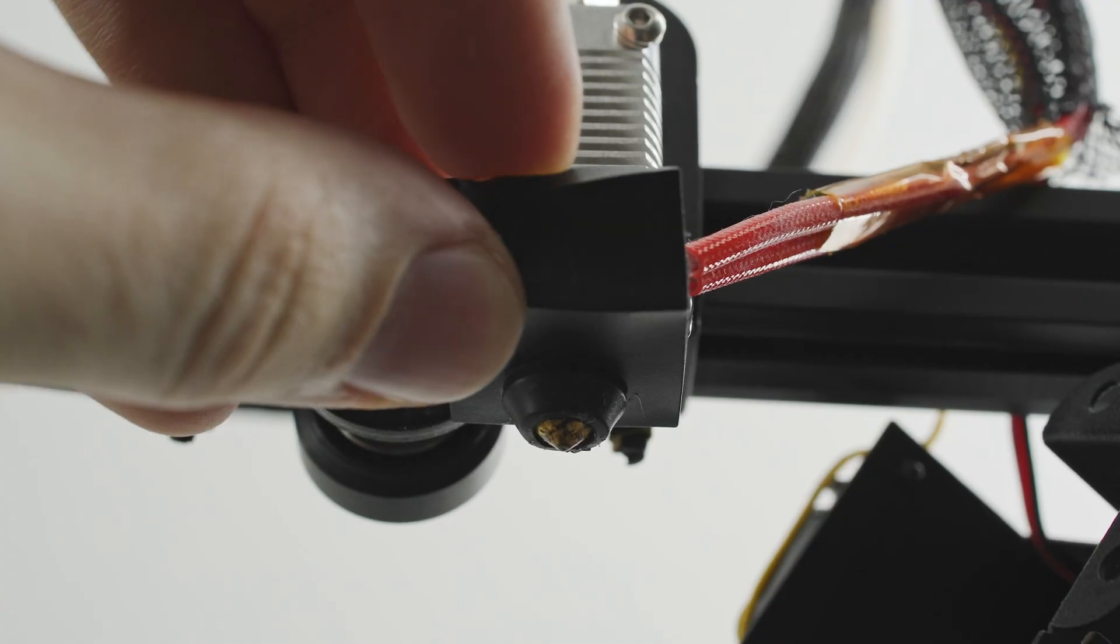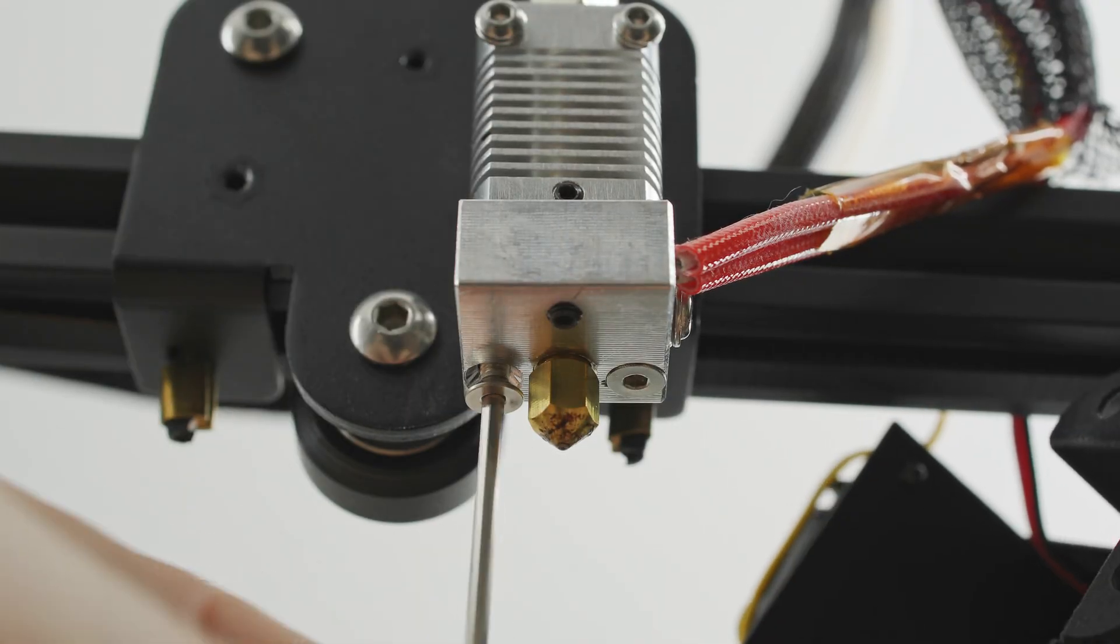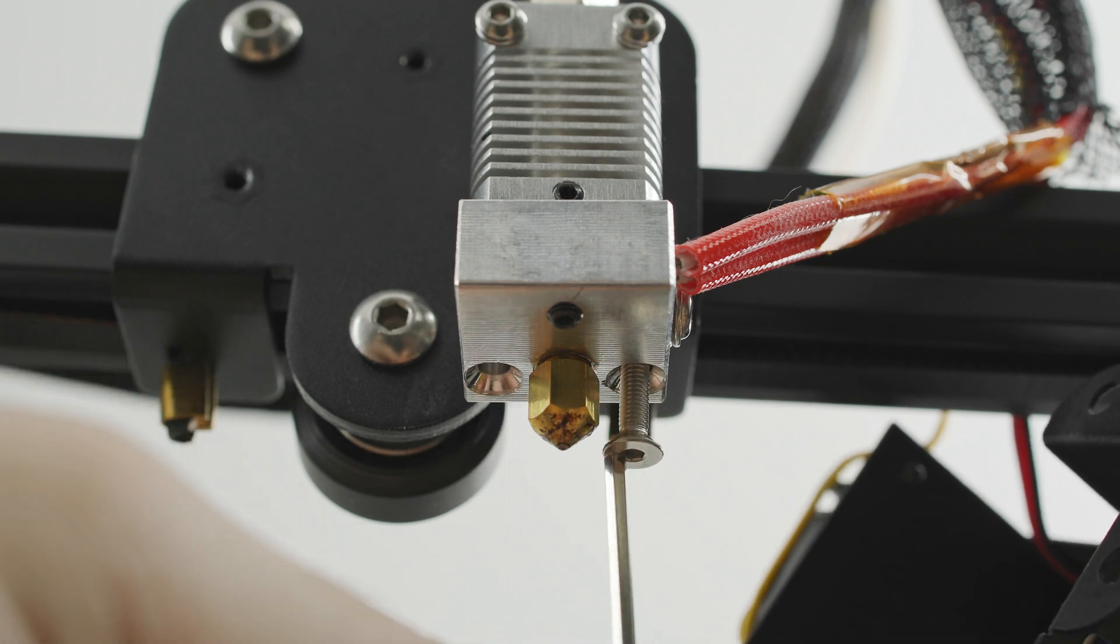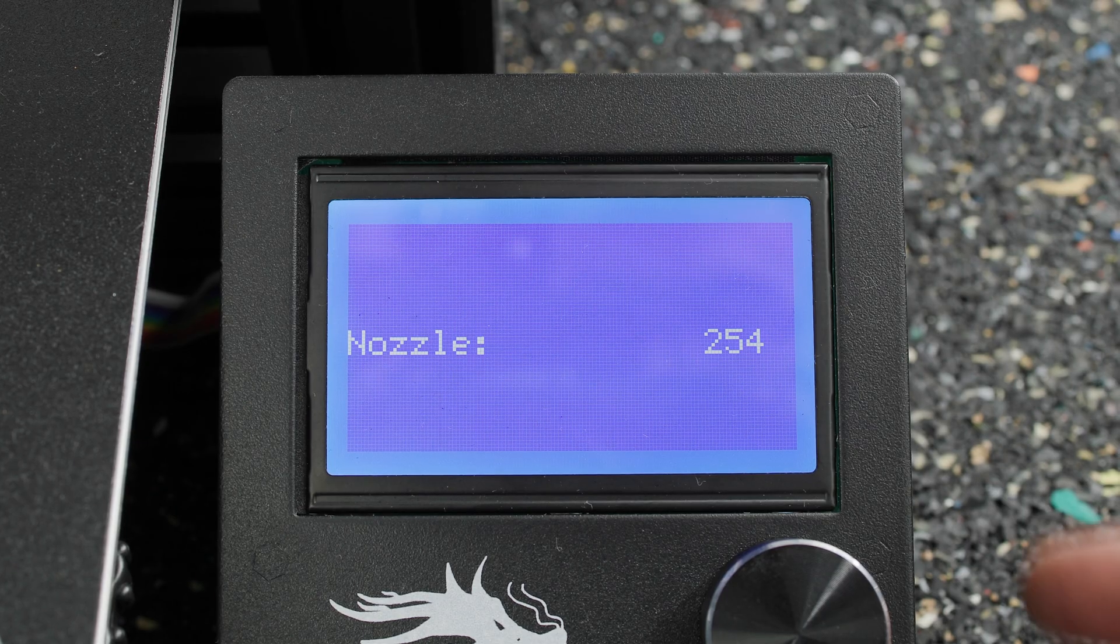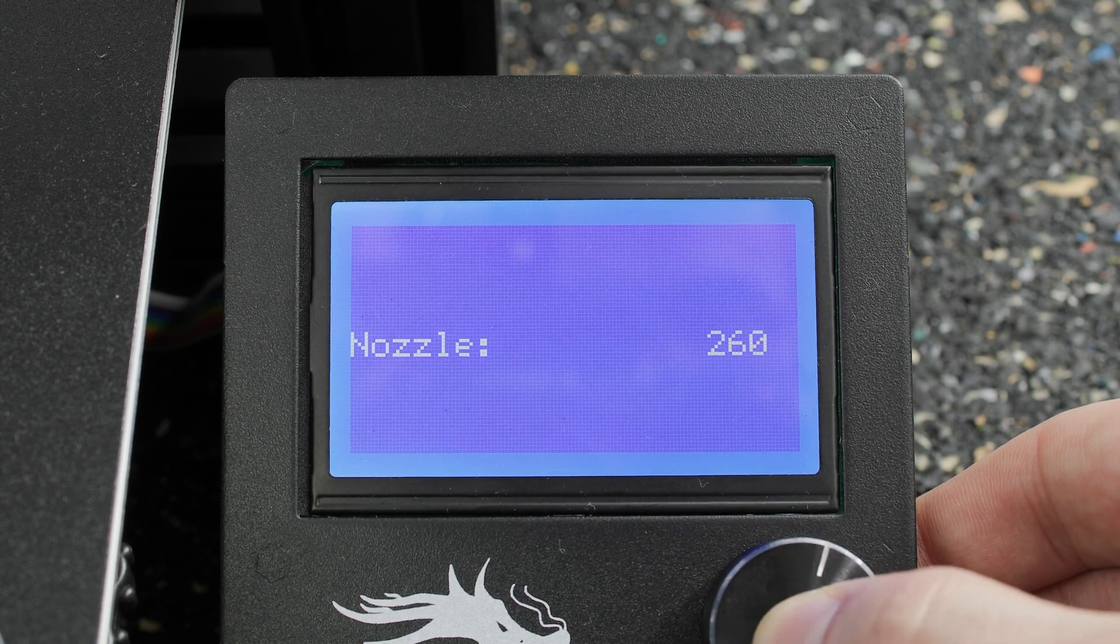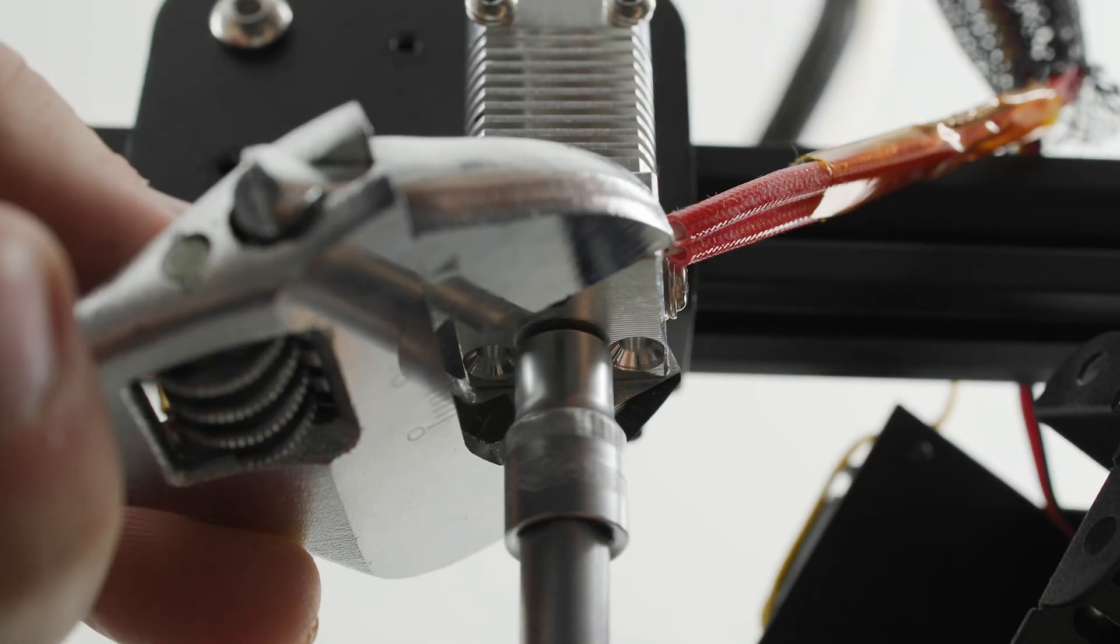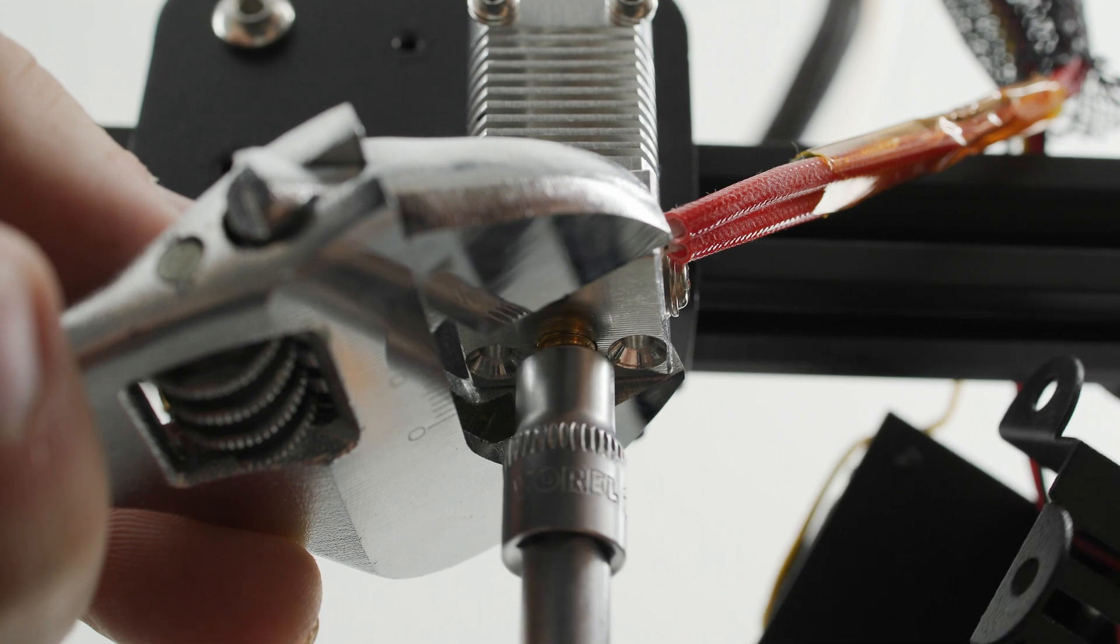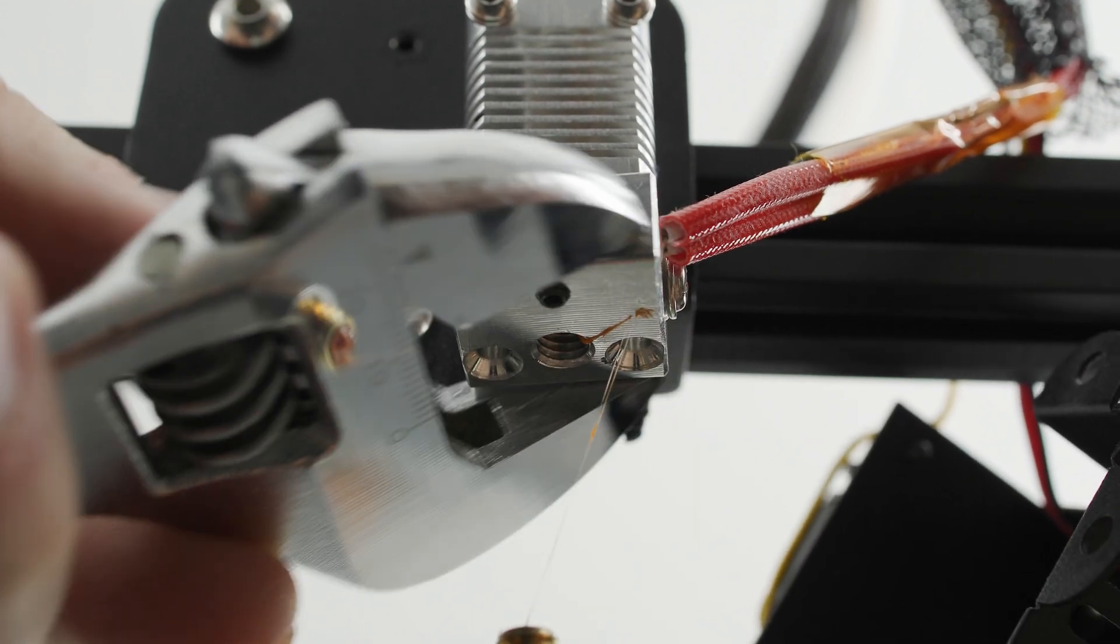Then remove the silicone sock from the heat block and remove these two screws. After removing them, heat the hotend to around 260 degrees. Using an adjustable wrench and a 6mm socket, carefully unscrew the nozzle.